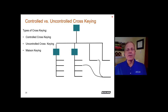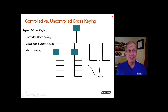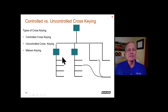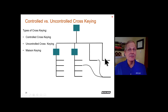If a change key from one portion of the schematic and another change key from a different area of the schematic are both operating a cylinder, that is uncontrolled cross-keying — because the keys come from under two different master keys. Think of it this way: if the keys are crossing over horizontally across the schematic to reach the cylinder, that indicates uncontrolled cross-keying.